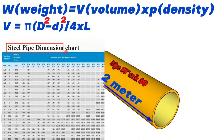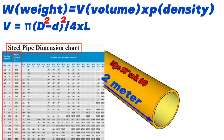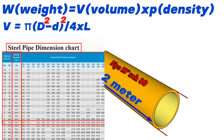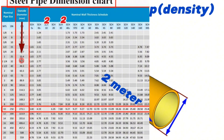This is the steel pipe dimension chart. The nominal pipe size is shown in the first column. The outside diameter of pipes is shown in the second column. The nominal wall thickness by schedule is shown in the last column. We will look at the row showing nominal pipe size 10 inch. The outside diameter of the 10-inch pipe is approximately 273 millimeters and the wall thickness for schedule 80 is shown as 15.09 millimeters.